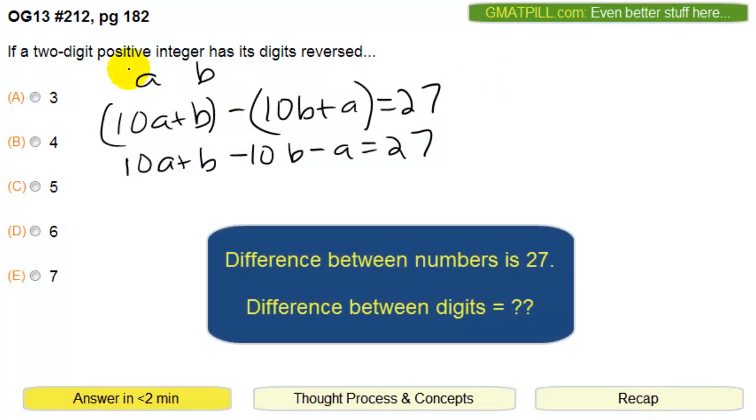Remember our job is to find out what is the difference between these two digits. So we're told what the difference between the numbers are, we're asked what is the difference between the digits. So our job is to figure out what is A minus B, or equivalently, what is B minus A.